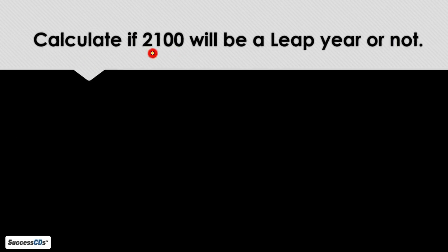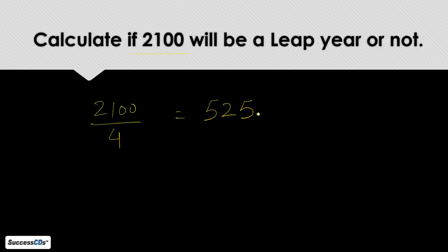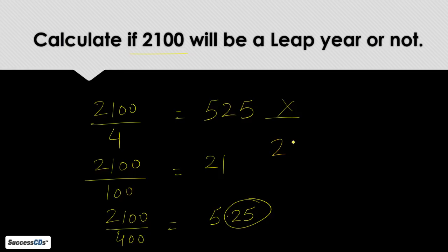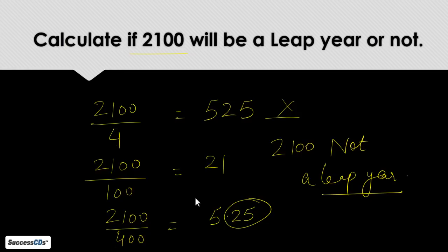Let us see one more example: calculate if 2100 will be a leap year or not. Step 1: 2100 divided by 4 gives 525 with no remainder, so it is divisible by 4. Step 2: 2100 divided by 100 is also exactly divisible with no remainder. Step 3: we divide 2100 by 400 and get 5.25 — there is a remainder. Hence 2100 is not a leap year, as it is not divisible by 400.